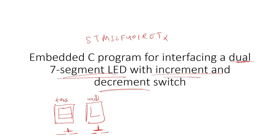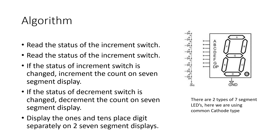The algorithm is simple: read the status of the increment switch and the decrement switch. If the status of the increment switch has changed, increment the count. If the status of the decrement switch has changed, decrement the count. Then display the ones and tens place digits separately on two seven-segment displays.